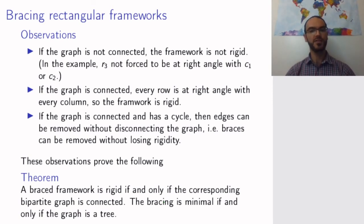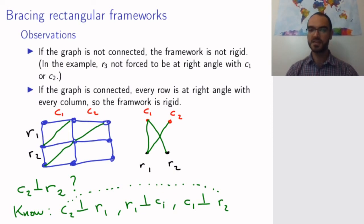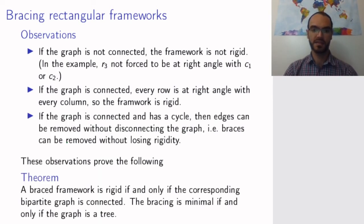This leads us to the following conclusion: a braced framework is rigid if and only if the corresponding bipartite graph is connected. The bracing is minimal—meaning I cannot remove any brace without losing rigidity—if and only if the graph is a tree. This answers the question. In this case, I have no cycles in this graph; it is a tree, so this is a minimal bracing. Whichever brace I remove will make my framework susceptible to being distorted. This is the solution to bracing rectangular frameworks: you draw the corresponding bipartite graph where braces correspond to edges, and you check that this graph is a tree.